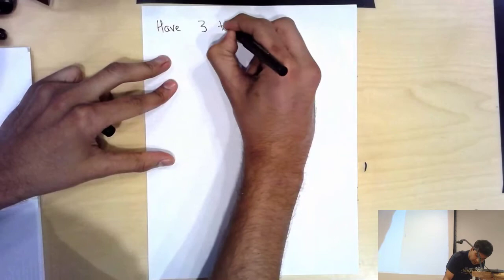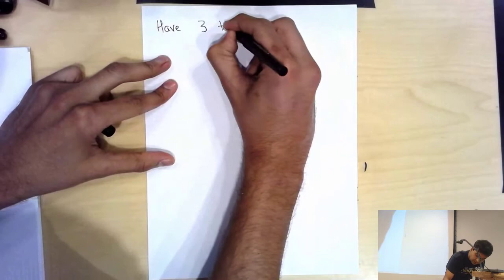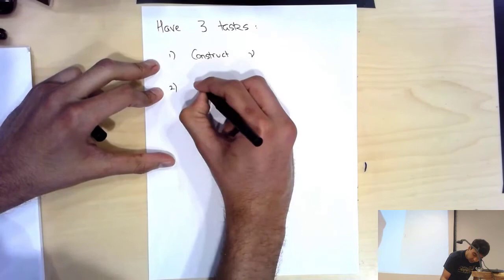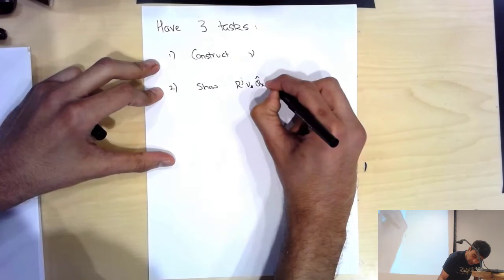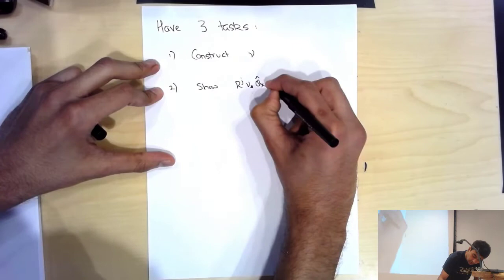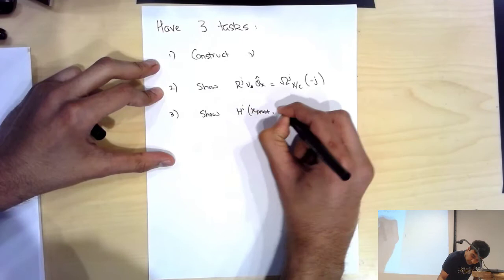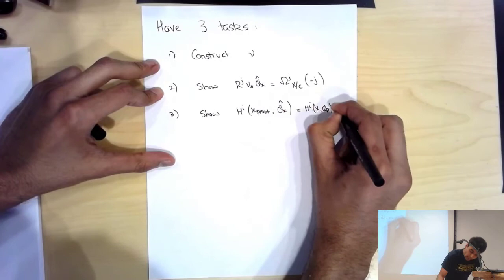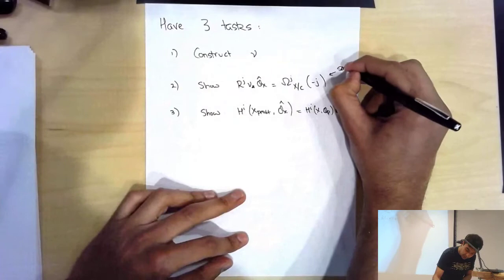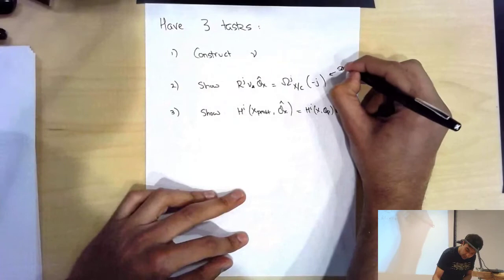So there are three tasks. Task one is to construct the map μ. Task two is to show that the pushforwards are what they should be. Task three is to show that the cohomology of Ô_X is what it should be. It turns out that tasks one and two only require smoothness — not properness — while task three needs properness but not smoothness.